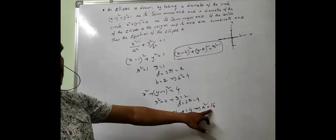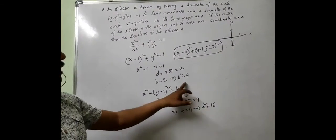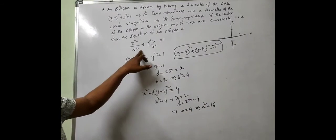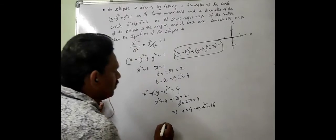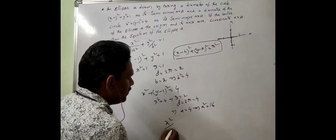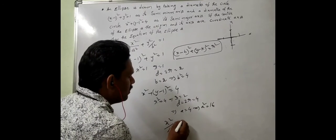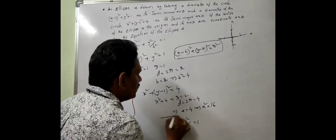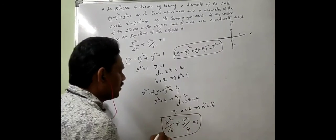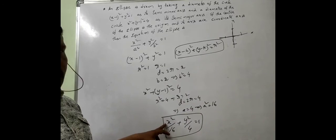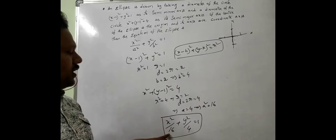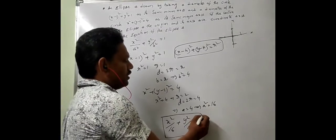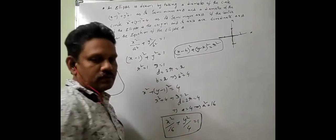We got a square is equal to 16 and b square is equal to 4. Substituting these values in the standard equation, we get x square by 16 plus y square by 4 is equal to 1. This is the required equation of the ellipse.